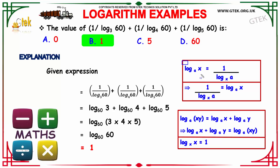Using the property that log x to the base a is equal to 1 by log a to the base x, we can write 1 by log 60 to the base 3, plus 1 by log 60 to the base 4, plus 1 by log 60 to the base 5 as log 3 to the base 60, plus log 4 to the base 60, plus log 5 to the base 60, by interchanging the argument and the base as per the property.